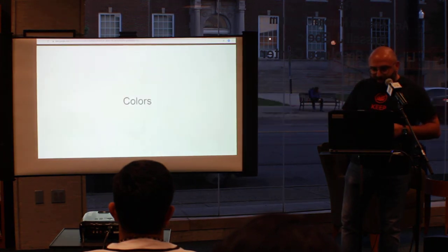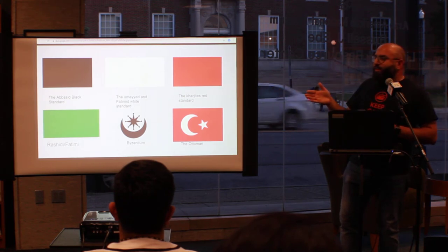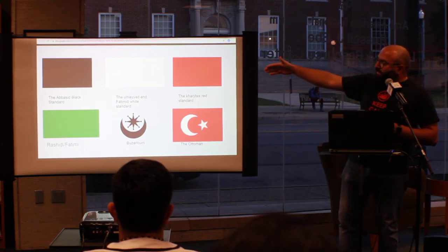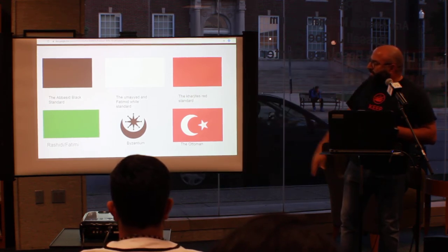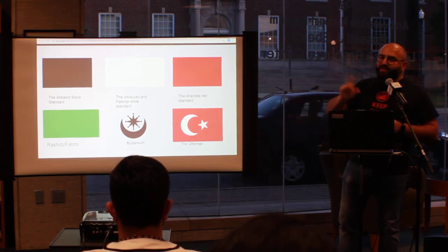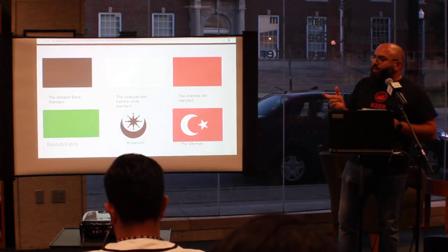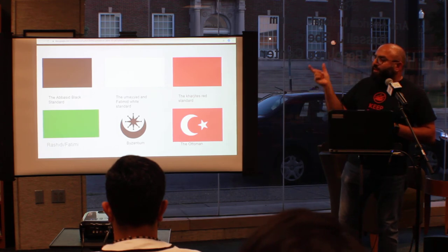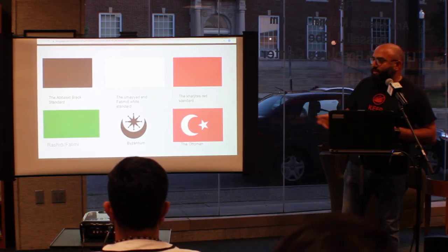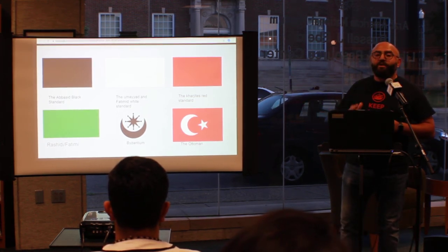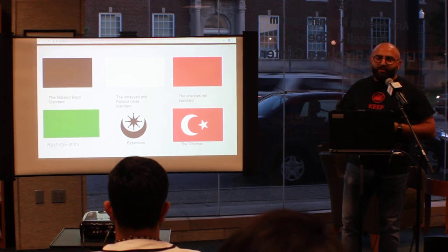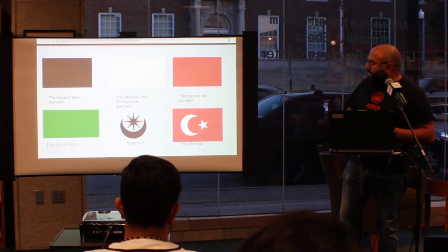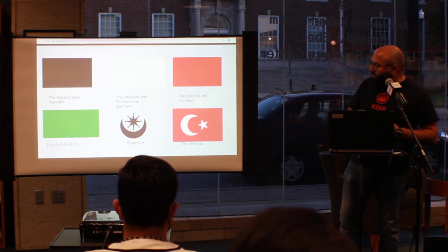Moving to colors: the Umayyad dynasty was known for the white flag. The Abbasid dynasty, which came after, adopted the black flag. The Fatimid dynasty was a small dynasty within the second Abbasid era and was the last Arab Islamic dynasty. After the Abbasid era, none of the other dynasties — and there were hundreds, sometimes a hundred appearing in a single year — were Arab, due to the instability following the Mongol attack on the Islamic world.